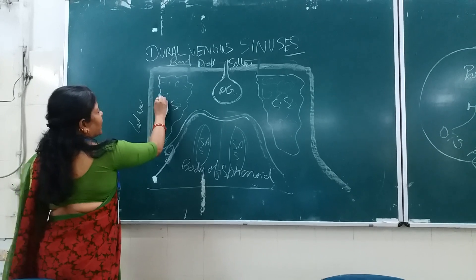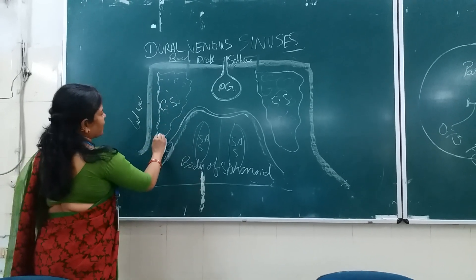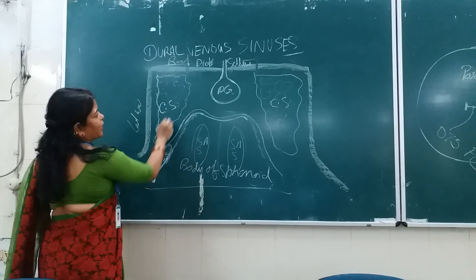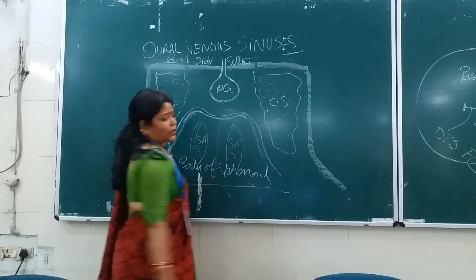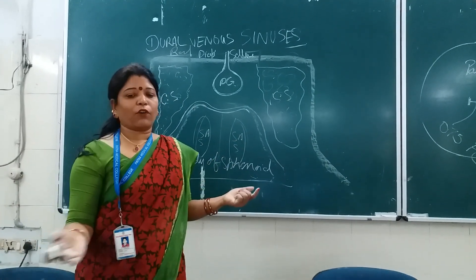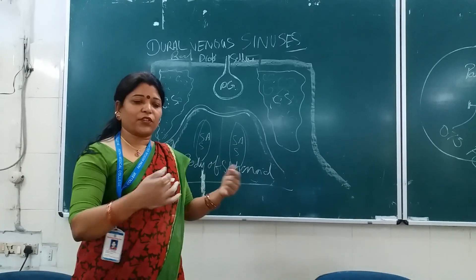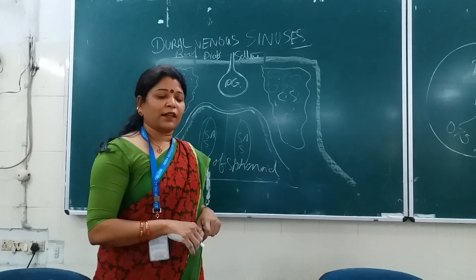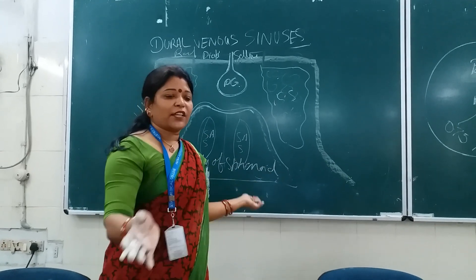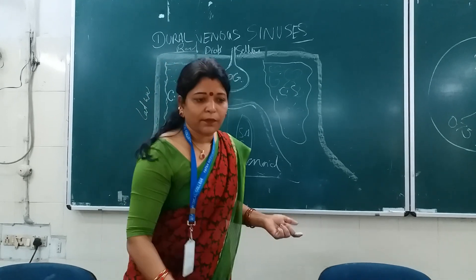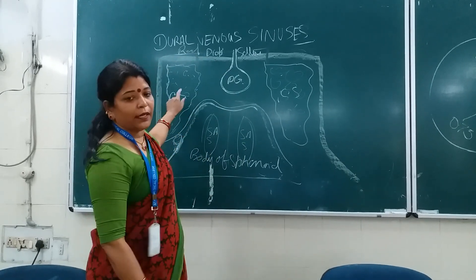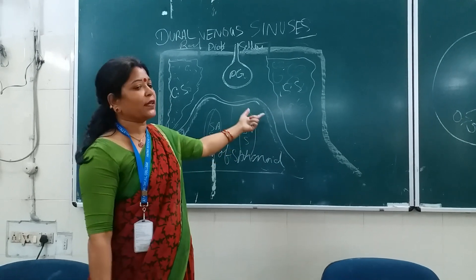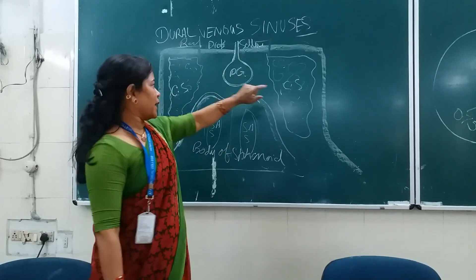The endothelial lining of the cavernous sinus makes it spongy in appearance because it has a large number of communications - tributaries, outgoing channels, incoming channels, and communications with the external venous systems. That is why it has a honeycomb or spongy appearance, and is known as the cavernous sinus.